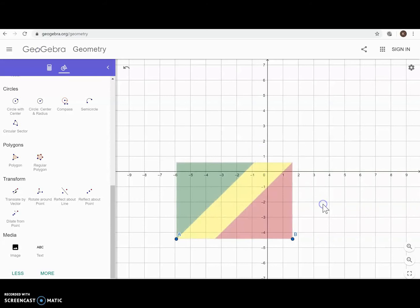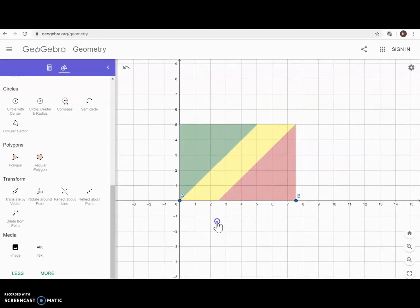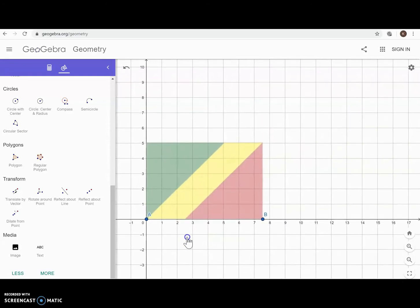Now, to work on vocabulary, we could talk about moving this flag or translating it to the first quadrant. So you can just simply left click and drag. And if you say translate it to the first quadrant, students would probably place it somewhere in this manner. But we could also say translate it to the first quadrant so that it's bounded by the y-axis and the x-axis.